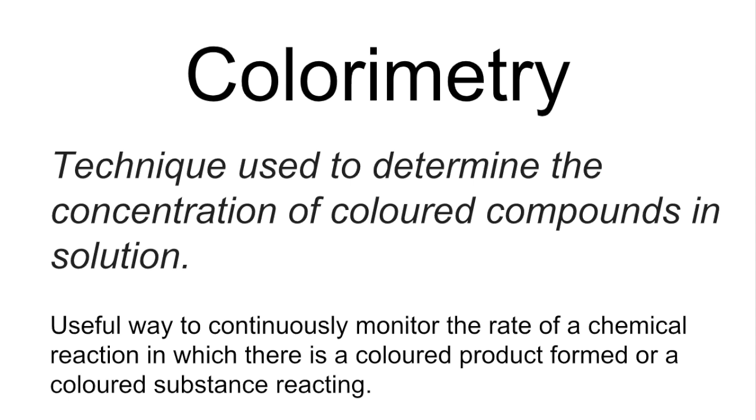If you imagine you've got a colored product being formed, obviously that color will intensify as the product forms. The opposite is true if you've got a colored substance that's reacting away—the intensity of its color will decrease over the course of the reaction. Colorimetry can be used to measure the color of a compound, and as you'll see we can actually translate that into concentration and rate.